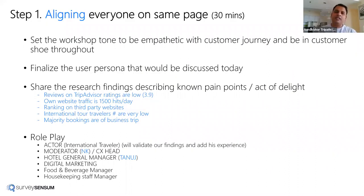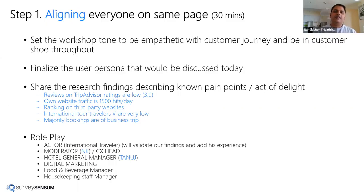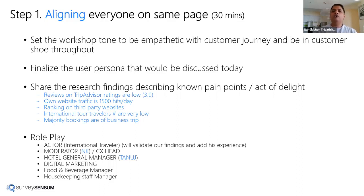The persona — the actor for this workshop — is an international traveler from India who is planning his trip to SS International Hotel in Scotland. We'll see how he does his journey from A to Z. Step one: aligning everyone on the same page. This sets the workshop tone — be empathetic with the customer journey and be in the customer's shoes throughout. You can run empathetic videos to draw out emotions, run quizzes, play games, or do other exercises to make sure everybody understands why we're here.